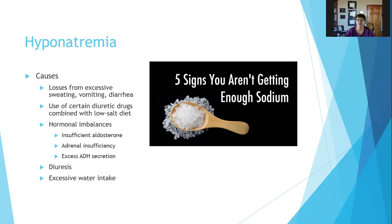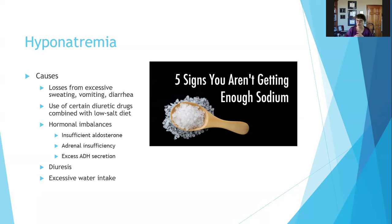Hyponatremia: the chemical symbol for sodium is Na, so hyponatremia means low sodium in the blood — hypo is low, nat is sodium, emia is the blood. Hyponatremia can be caused by excessive sweating, vomiting or diarrhea, or use of certain diuretic drugs combined with a low-salt diet. Many people on diuretic drugs for cardiac issues are also on a low-salt diet, so doctors monitor sodium and potassium levels regularly — usually once or twice a year.